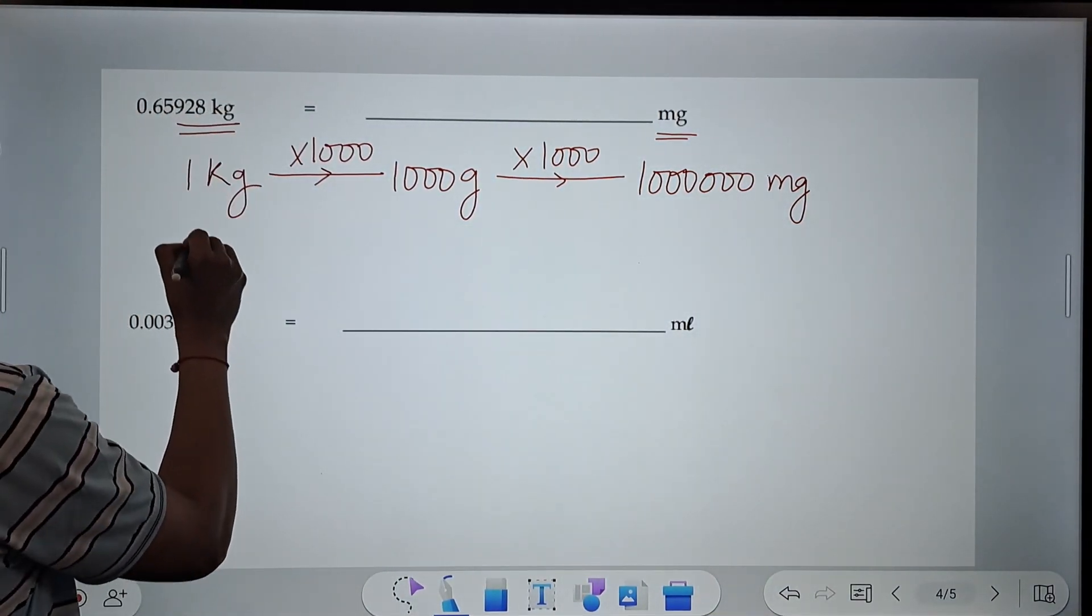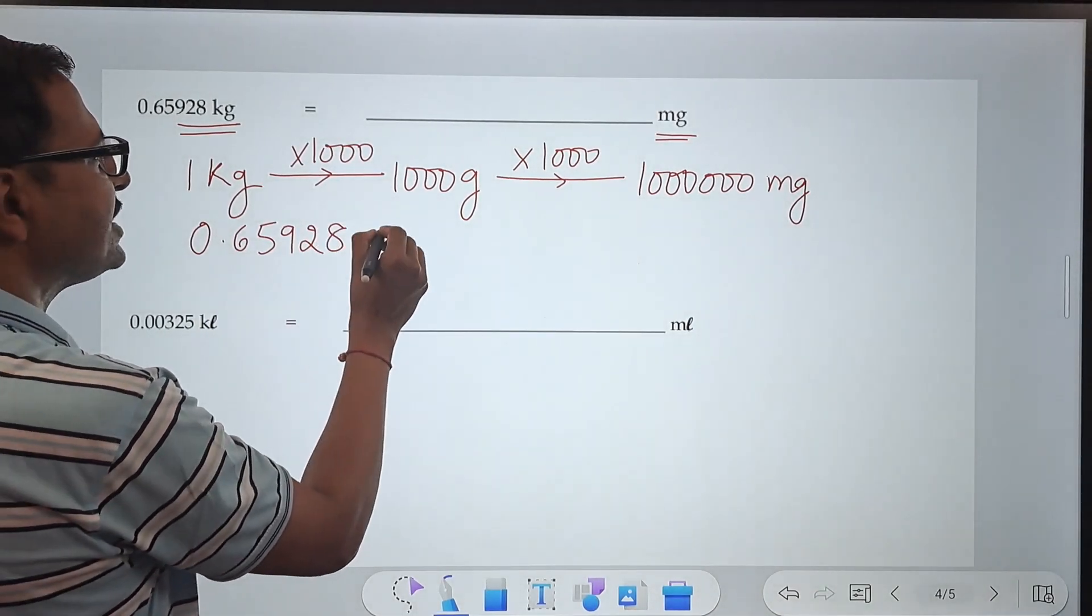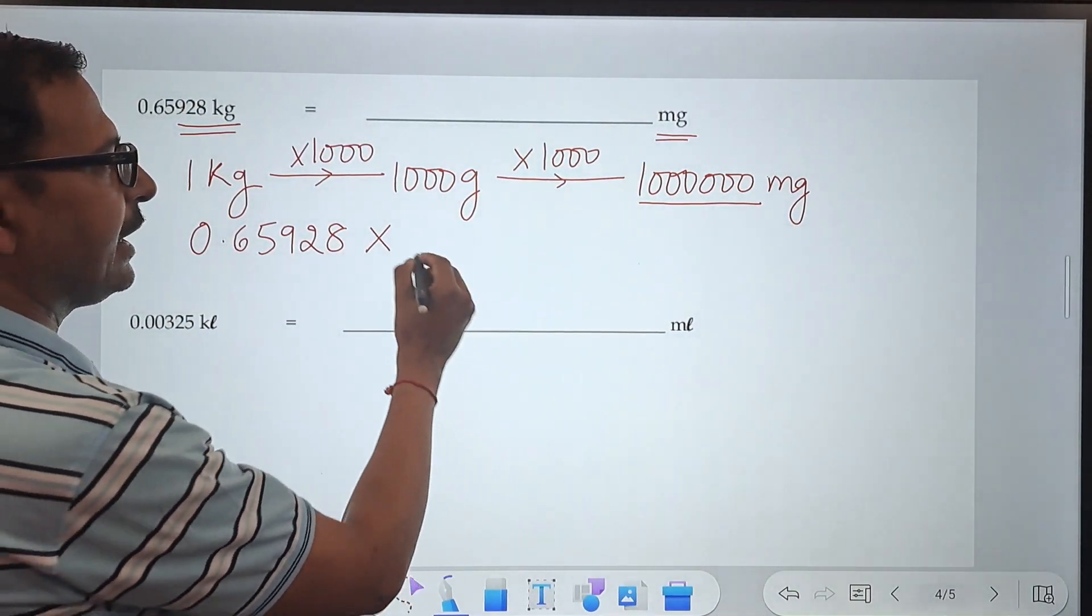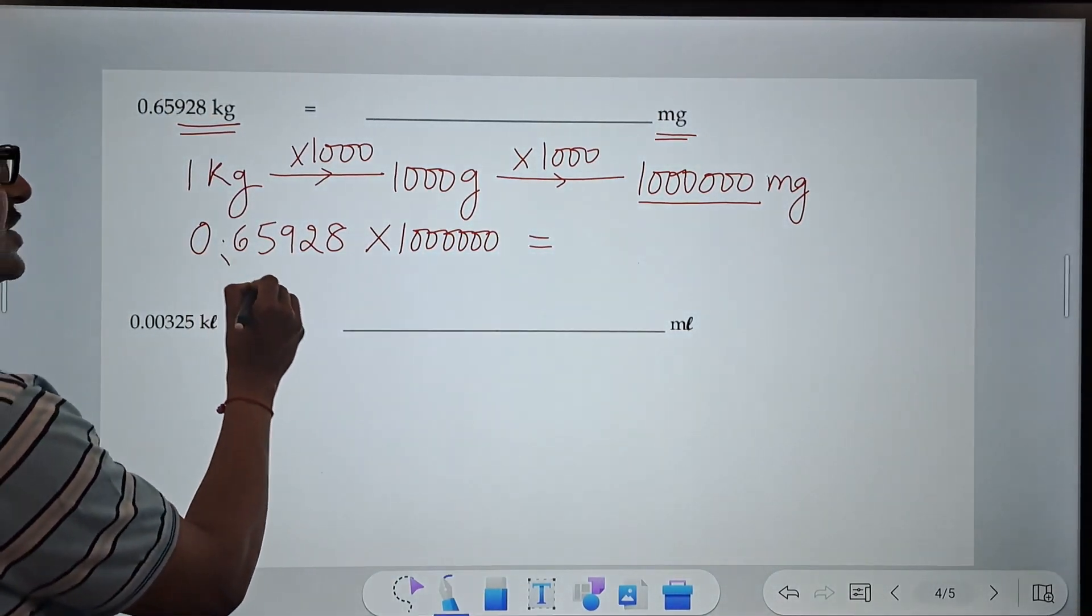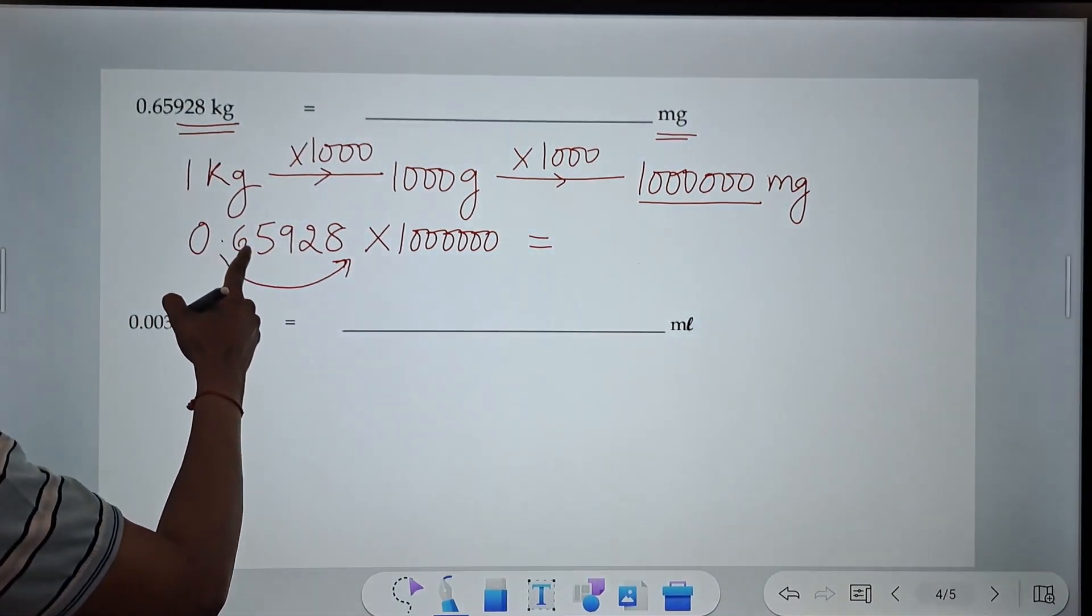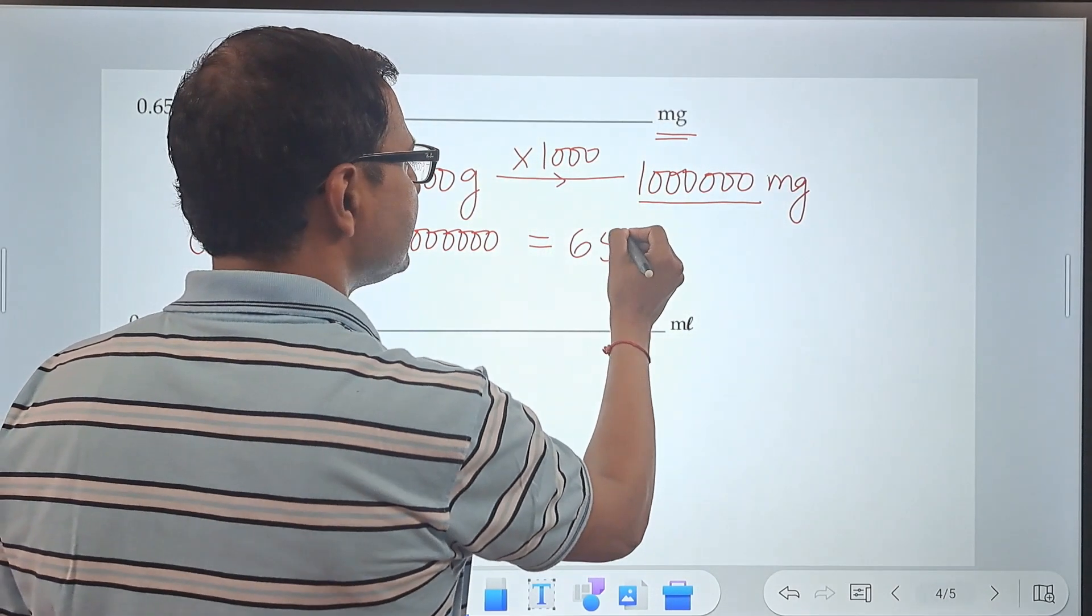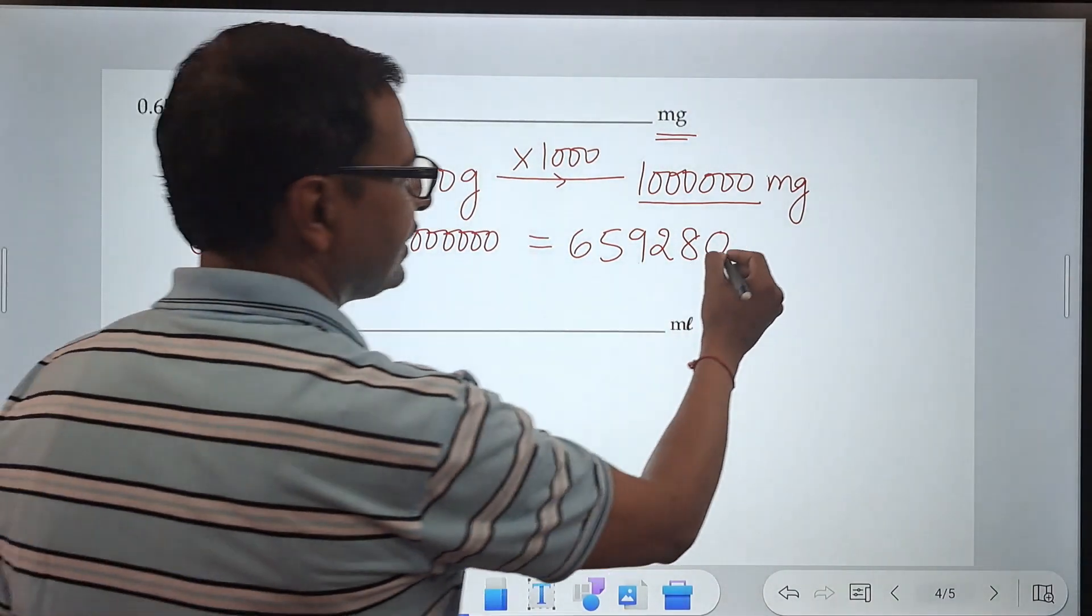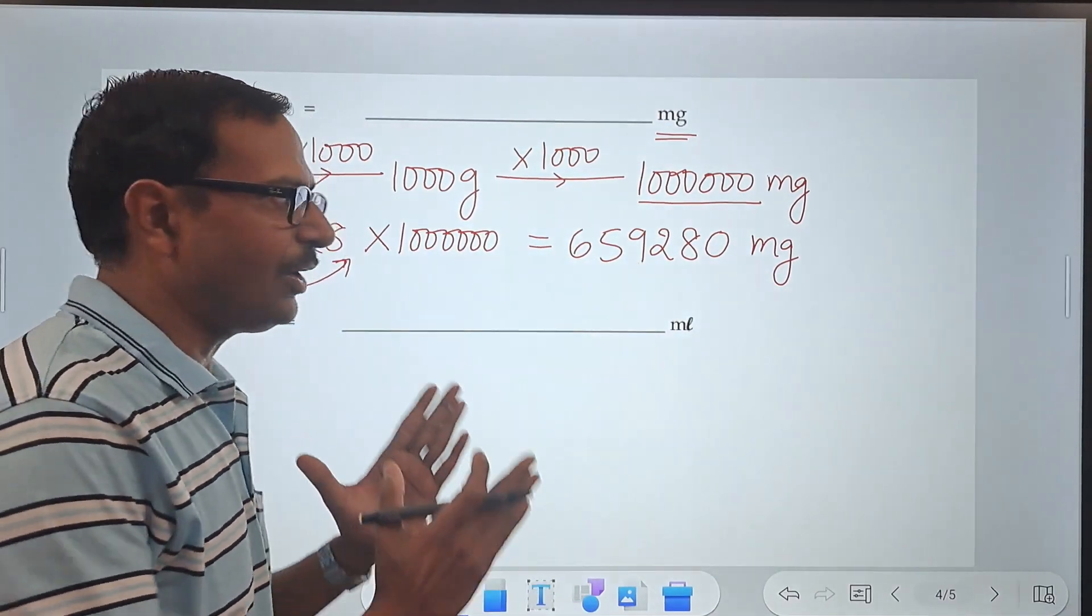Now since we have 0.65928 kilograms, we will just multiply it by this factor to get it converted to milligrams—one followed by six zeros. So the decimal will shift six digits towards the right. This will become zero point—the zero vanishes—and 65928, these are the first five digits. And we have to put a zero because we have to shift it six digits. This will become milligrams. That is the easiest possible conversion of this question.